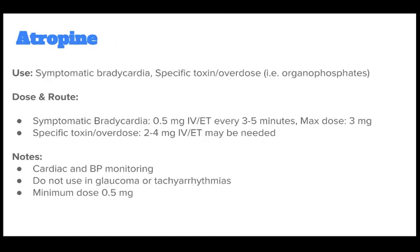Atropine is used for symptomatic bradycardia and specific toxin overdose, such as organophosphates. The correct dose for symptomatic bradycardia is 0.5 mg IV/ET every 3-5 minutes with a max dose of 3 mg. For specific toxin overdose, 2-4 mg IV/ET may be needed. Notes: cardiac and BP monitoring, do not use in glaucoma or tachyarrhythmias, and the minimum dose is 0.5 mg.